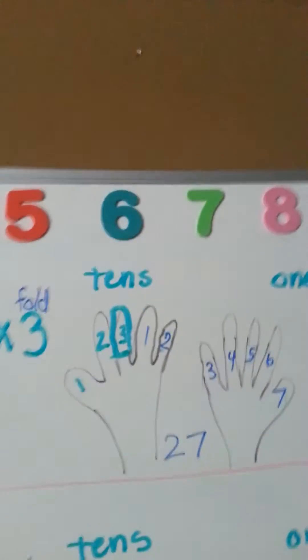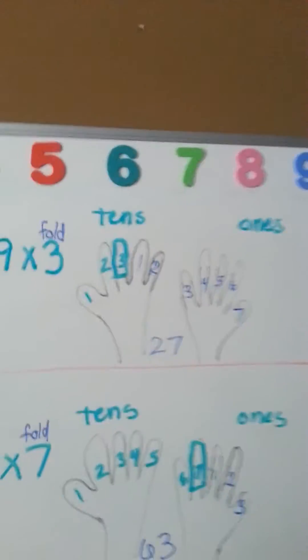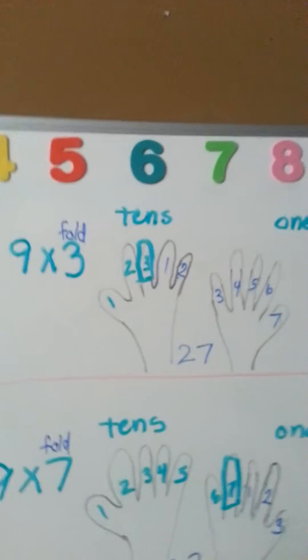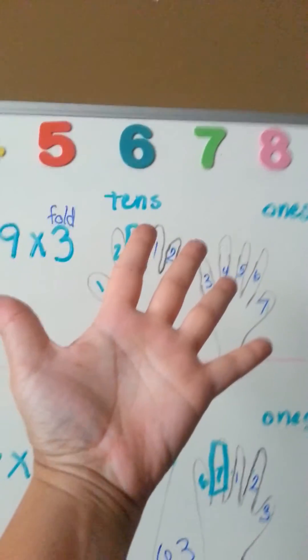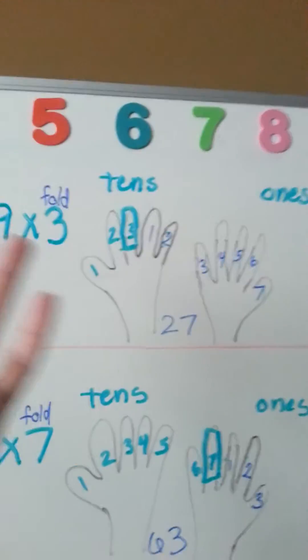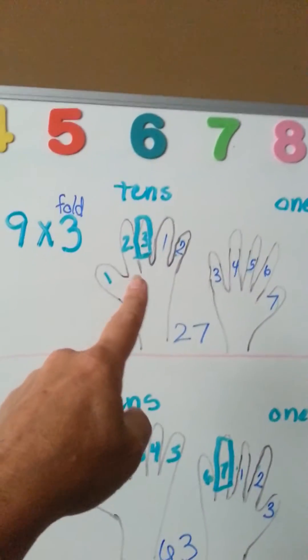So, the first one we're going to try is 9x3. What you do is, you hold your hands in front of you like this. I'm holding my phone so I can't do it. So I drew it up here.